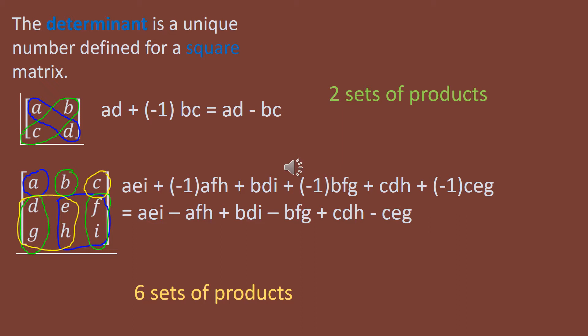Now for a 3x3, there are six possible products, not just two. If I take the A in the first row and first column and pair it up with that lower right-hand 2x2, A, E, and I is a product that contains values in different rows and different columns.